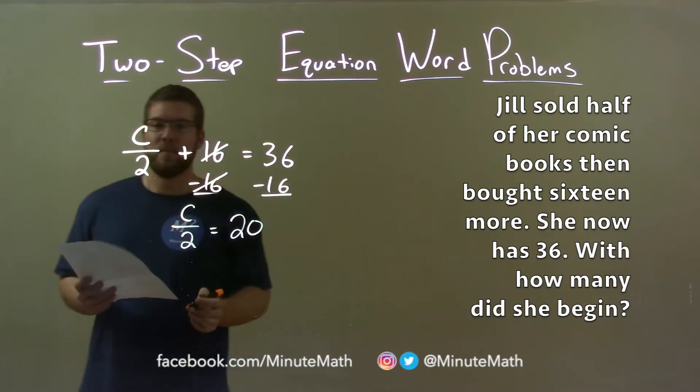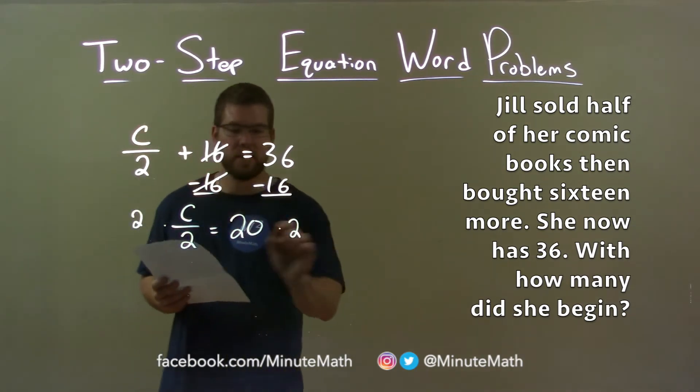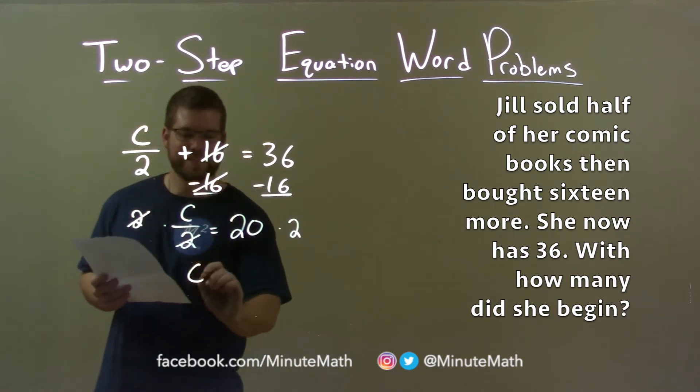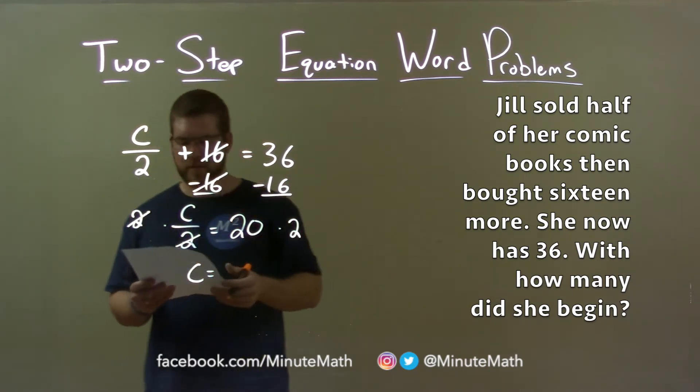We then are divided by two here, so if I multiply both sides by two, the twos cancel, leaving me C by itself, and 20 times two is 40.